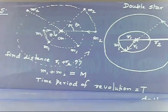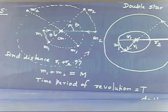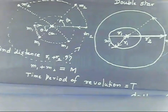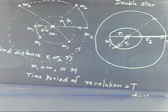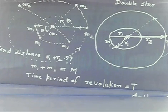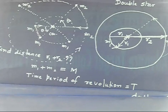Here are some hints. First, write down the equation of circular motion: force toward center equals mass times acceleration. From there, find the time period using T = 2πr/v. Write circular motion for both masses m1 and m2, find v1 and v2, then write T = 2πr1/v1 and T = 2πr2/v2. You will get the answer.